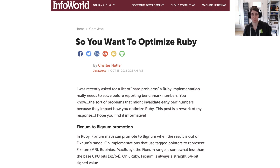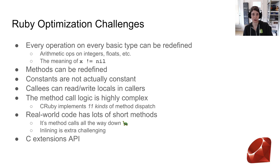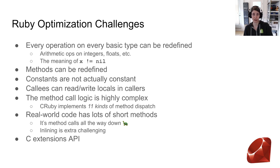There's a blog post from 2012 that goes into many of the optimization challenges in making Ruby faster, and I think it's still pretty relevant. The things most notoriously difficult are that every operation on primitive types can be redefined — you can redefine the meaning of plus and minus, you can redefine something like x equals not nil. You have classes, but you can redefine methods at any time. Constants are not actually constants. Closures can sometimes read and write locals inside of callers. The method call logic is highly complex — in CRuby there are 11 different kinds of method dispatch, which can make inlining very hard.